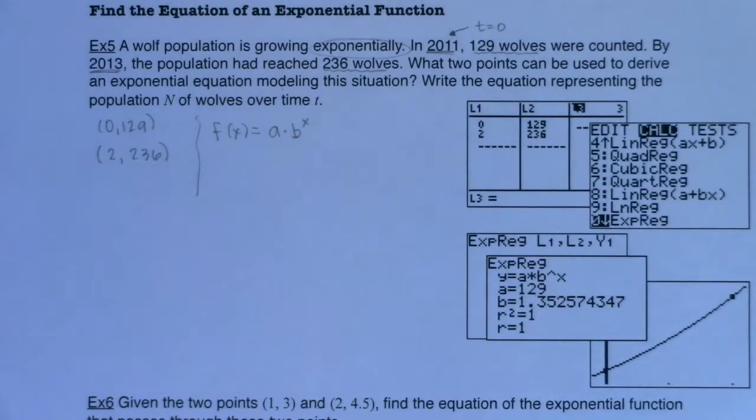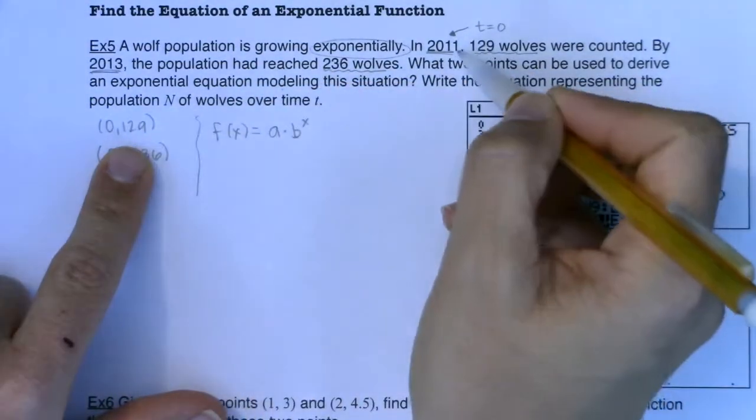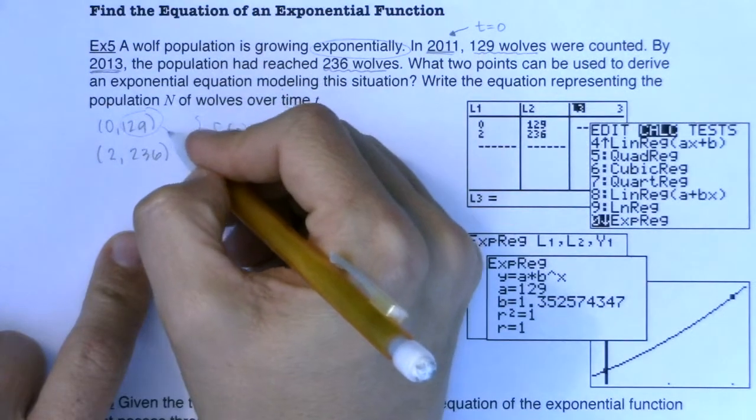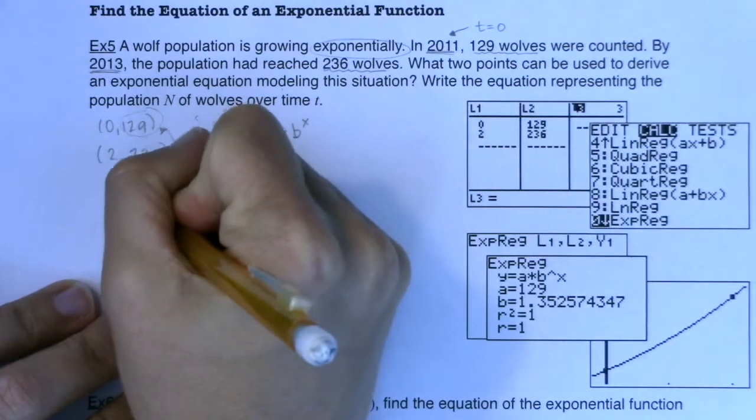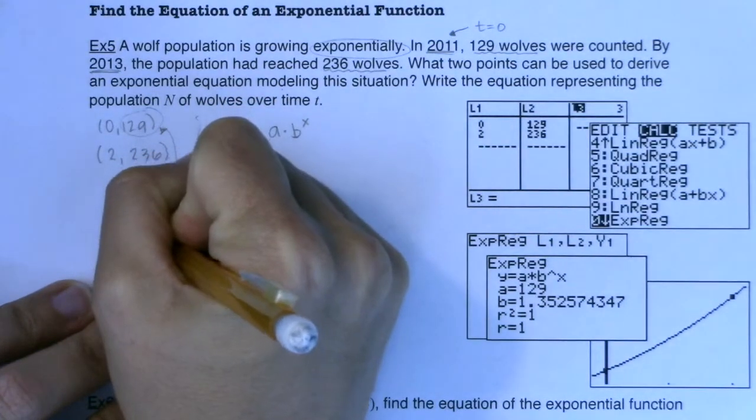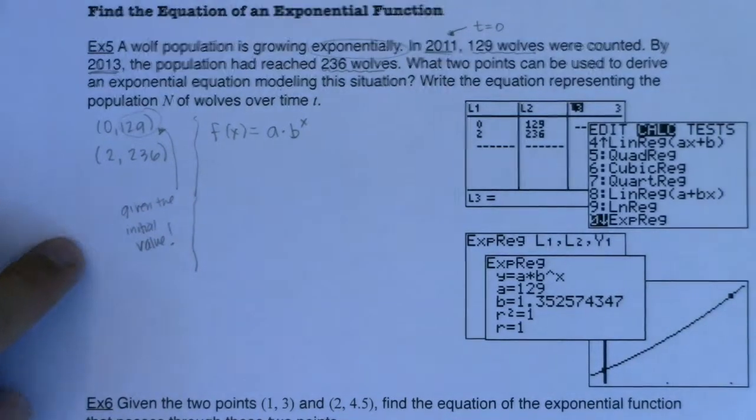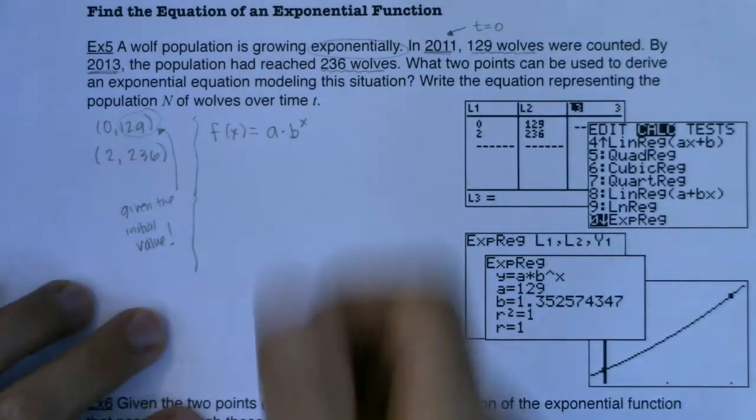Now, these two ordered pairs, well actually I should say one of these ordered pairs is special. If you look here, this ordered pair, the way it was written or the way I chose to write it because I set 2011 as my base year, I have my initial value. So 129 is my initial value. So at least for this example, and this is not always the case, but in this example, I was given the initial value. This is not always the case. You won't always be given the y-intercept. And in fact, in the next problem, I won't give you the y-intercept and then we'll see how we get the exponential model that way. It's a little bit trickier when you're not given the y-intercept, but I was here.